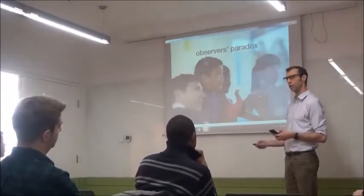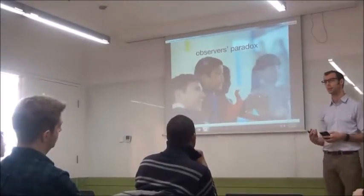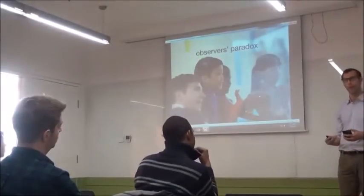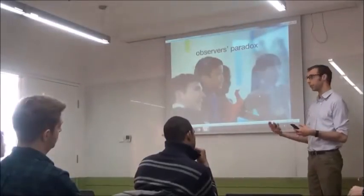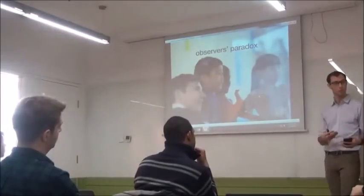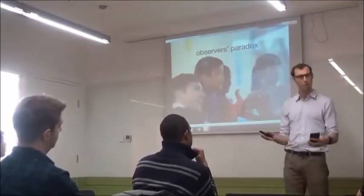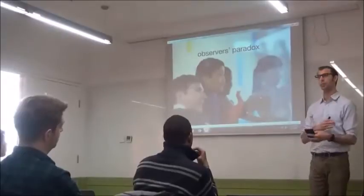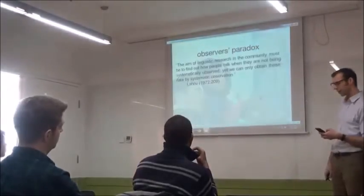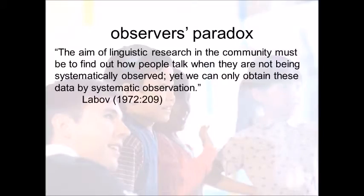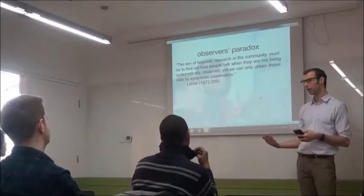The Observer's Paradox comes from William Labov in the 1970s, an applied linguist who wanted to see what kind of everyday language everyday people used in ordinary conversations. He'd go into people's homes with a tape recorder, set it up, and get people to talk. But what they said was completely unlike a normal conversation. Labov found that the aim of linguistic research must be to find out how people talk when they're not being systematically observed, yet we can only obtain this data by systematic observation. When you observe people talking, they talk differently.